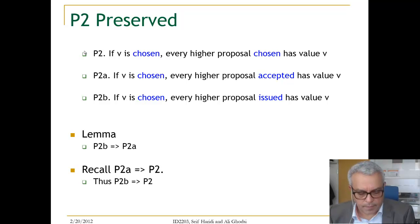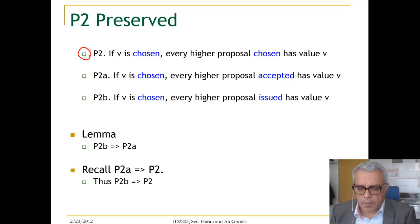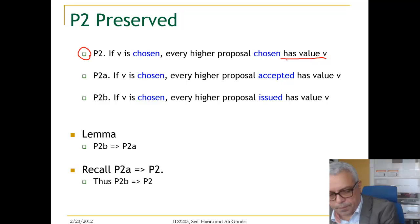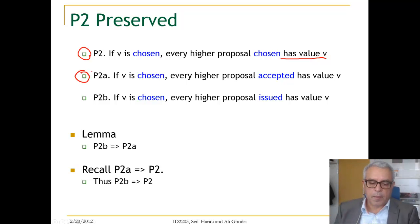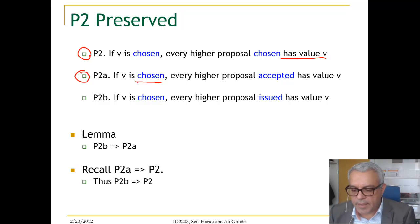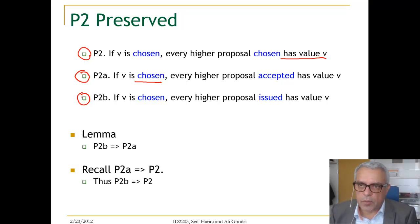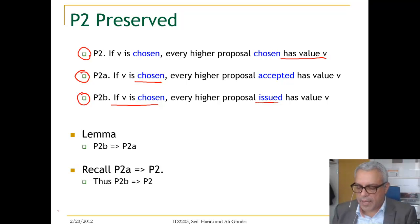Let us remember where we were. We wanted to prove P2, and P2 says if a value is chosen, it means that a majority of acceptors has this value. Every higher proposal chosen should have that value. To achieve this, if V is chosen, we would like that every higher proposal accepted has the value V. The processes that propose values: if V happens to be chosen, then every higher proposal issued should have the value V.